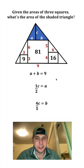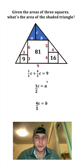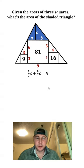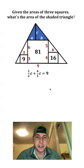Now let's go back to A plus B equals 9. For the A, I'm going to plug in 1 half C. And for the B, I'm going to plug in 4 fifths C. And let's multiply both sides by the least common denominator, which is 10.